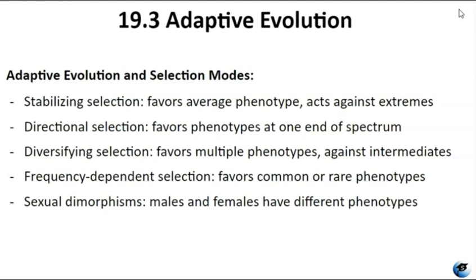Sexual dimorphisms — where males and females of a species differ beyond just their reproductive organs — are common in many populations. Males often possess larger sizes and elaborate adornments, while females are often smaller and less decorated. These differences arise when there is greater variation in male reproductive success. Some males, typically bigger and more adorned, secure the majority of matings, while others are unsuccessful, due to males' fighting ability or females' preference for certain traits. This variation generates strong selection pressure among males, leading to the evolution of larger body sizes and elaborate ornaments. Sexual dimorphism varies among species, and some species exhibit reversed sex roles where females are selected for larger sizes and elaborate traits.